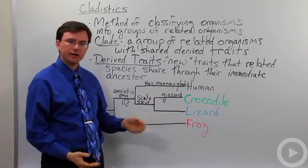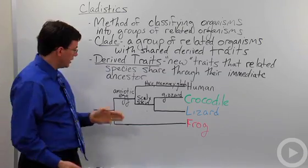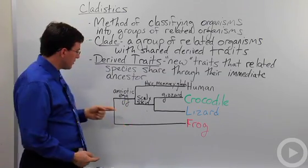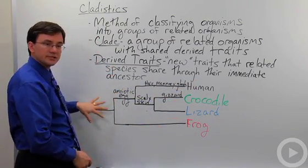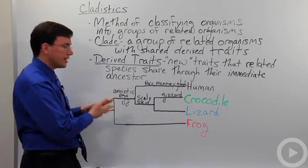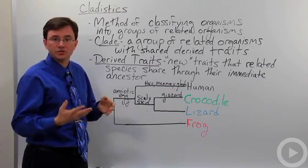You'll often see these diagrams called cladograms. Here's an example of a cladogram that shows some common ancestor to all these organisms. That common ancestor may have been some kind of four-limbed fish or something like that.